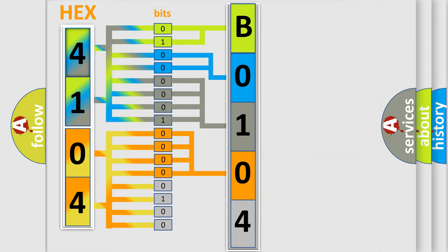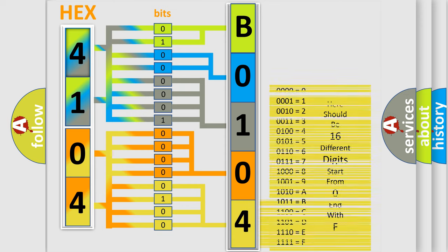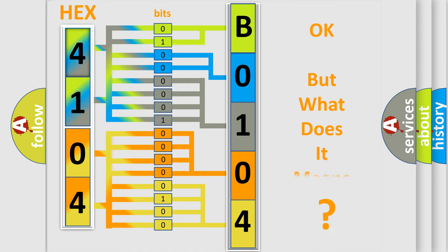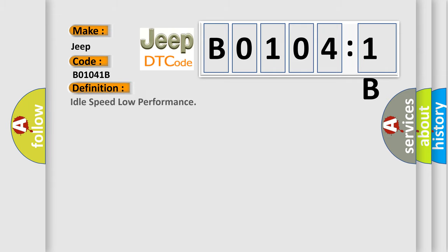A single byte conceals 256 possible combinations. We now know in what way the diagnostic tool translates the received information into a more comprehensible format. The number itself does not make sense if we cannot assign information about what it actually expresses. So, what does the diagnostic trouble code B01041B interpret specifically for Jeep car manufacturers? The basic definition is: idle speed low performance.